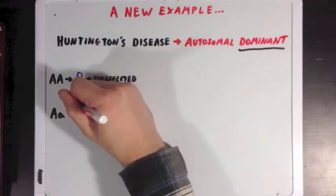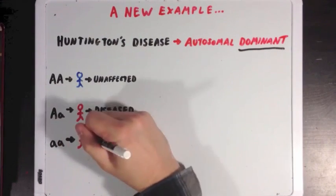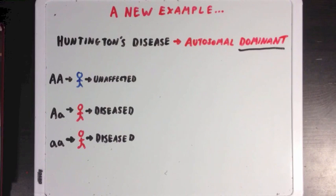However, if a person has either one or two copies of the gene, then that person will be affected by the disease either way, and I've drawn both of these people in red.